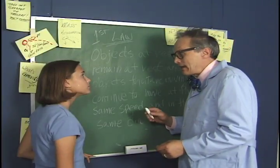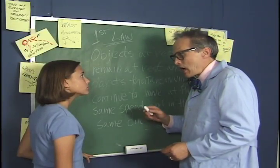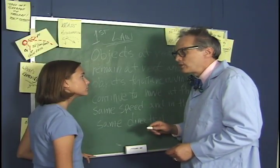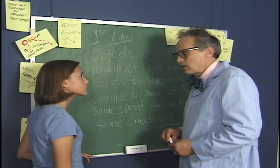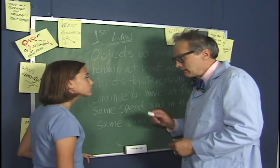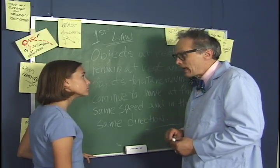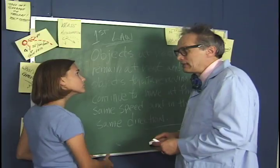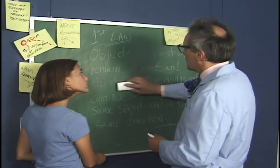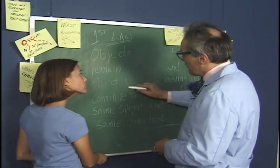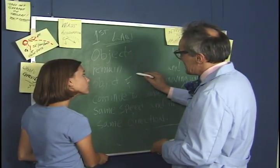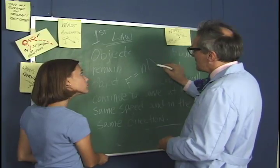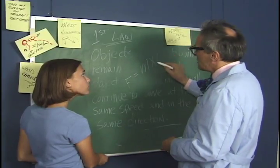Showing how the velocity and acceleration of an object changes when you apply a force to it demonstrates Newton's second law of motion. Later, when you learn algebra, you'll learn that this can be written like a math problem. It's written: force equals mass times acceleration.